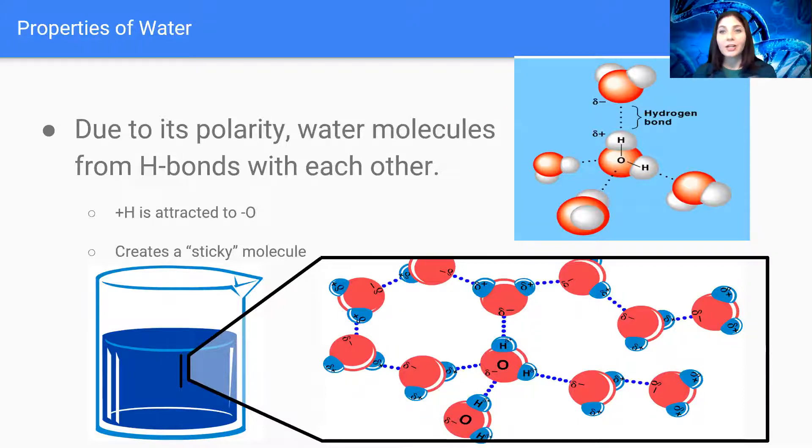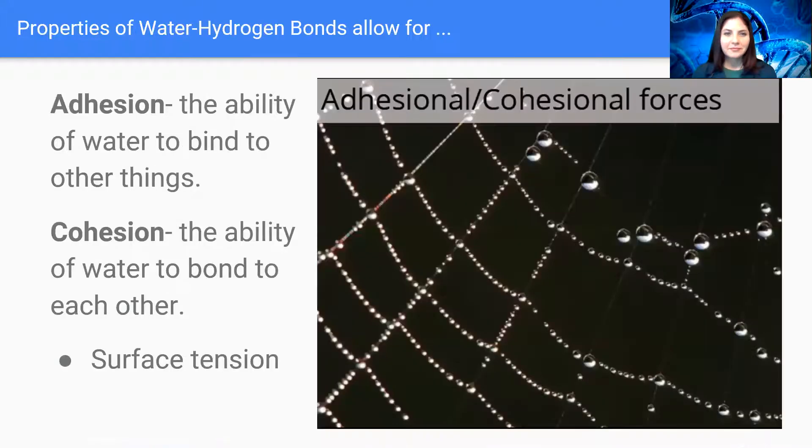This creates what we call surface tension. There are two factors that go into the concept of surface tension. We have adhesion, which is just like tape. If you think about tape, it's sticky, it adheres to surfaces. Adhesion is the ability of water to bind to other things, not to itself. Just like tape, you stick it on something else.